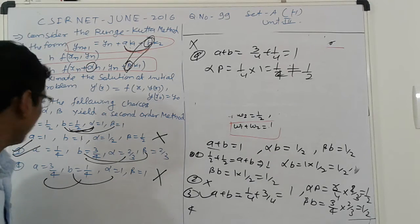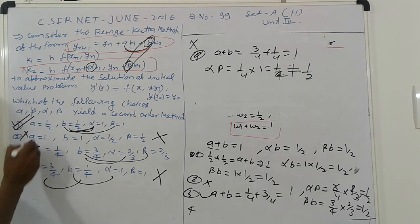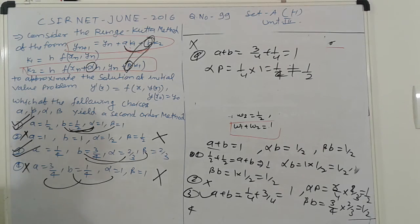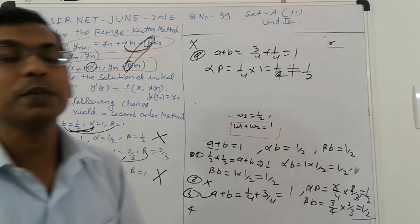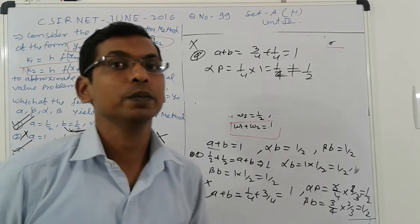Here it means first and third option is correct. First, third option. Second and fourth is wrong. So basic is a conceptual problem, friends. That is the Runge-Kutta method. Thank you, bye-bye.